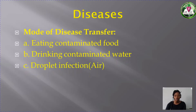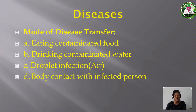Droplet infection, like coronavirus. In this period of pandemic, if you are near someone and the person mistakenly sneezes around you, notice that the droplets — if the person has coronavirus and it falls on any surface and you touch it, you can contract coronavirus. So droplet infection has to do with all those droplets that fall because of sneezing or coughing. Also, body contact with an infected person — for instance, if someone has chicken pox or measles and you have body contact with such a person, it can actually be transferred to you.